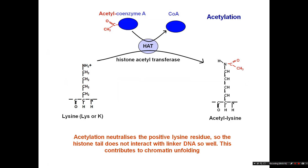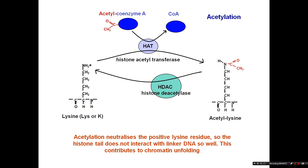Acetylation happens on lysine residues and involves a histone acetyltransferase. There are many types of HATs which can acetylate different lysines, and they use acetyl coenzyme A to take the acetyl group and attach it to the lysine residue. This neutralizes the positive charge so the histone tail doesn't interact with the linker DNA as strongly, contributing to chromatin unfolding. It also forms a new binding platform for proteins that bind acetyl lysine. Acetylation can be added by HATs and is removed by histone deacetylases, or HDACs.